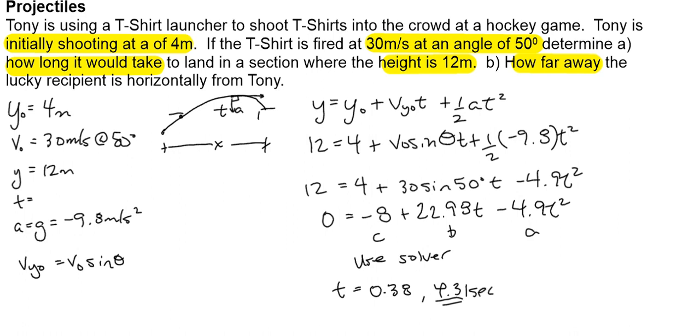Part b asks how far it went. Well, that's just the range. x equals x₀ plus v_x t. Started at zero, we'll assume it's zero because we want to know how far away it went. So x is equal to, remember that x is v₀ cos θ, it doesn't change, so it's the same only along times t. That is going to be 30 cos 50 times the 4.31. If I've done my work correct, I should get an answer of 83.11 meters. So the lucky recipient is about 83 meters away.